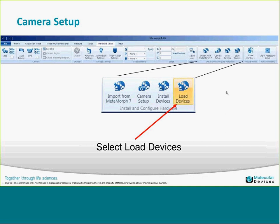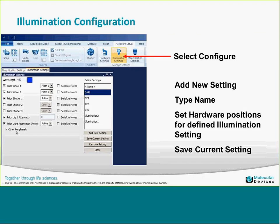Metamorph NX also has an Other Peripherals option, so you can now be more specific on other hardware aspects you may want to control for a specific illumination setting. In Metamorph for Olympus, certain components were classified as either a magnification component or an illumination component and there was no way to switch between the two. Now you have the ability to control those components with Other Peripherals, so a device associated with magnification can also be configured with an illumination setting.